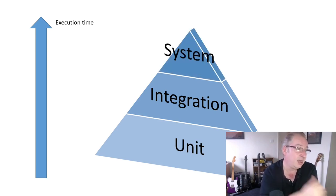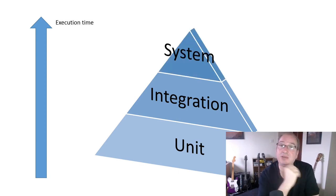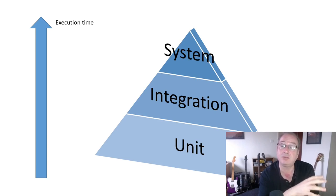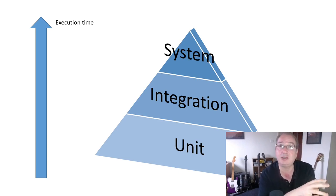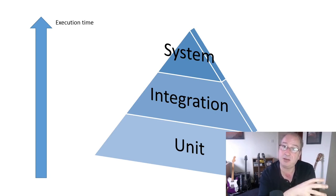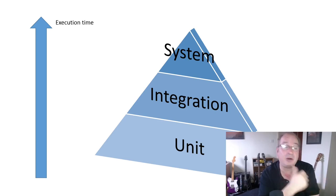At the tip of the pyramid — the fewest tests — are end-to-end system tests, for example testing your application through a web browser. You might have just a few dozen of those, a cherry-picking of system tests. The idea is that unit tests should be testing the internal logic of our application, and we'll compare testing that logic through a browser versus through unit tests.